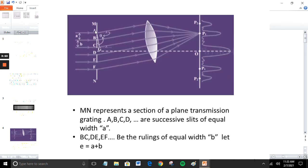Here, MN represents a section of plain transmission grating. A, B, C, D are successive slits of equal width A. BE and CF are the rulings of equal width B. Let E equal A plus B.